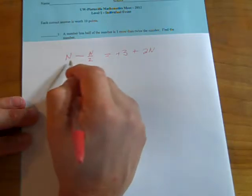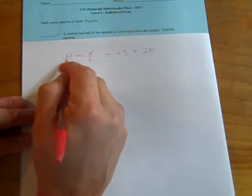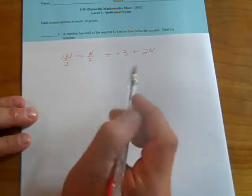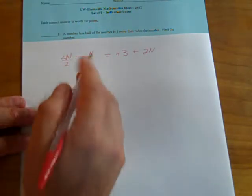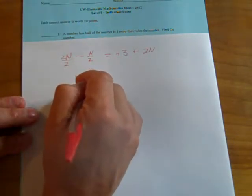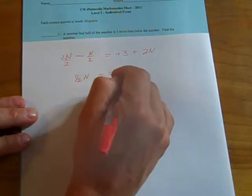And it says find the number. Well, over here, we have some like terms, and again, I'll write this so it really jumps out at us. 2n over 2. So, 2n minus n all over 2. That's one half n. Equals 3 plus 2n.